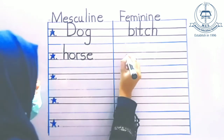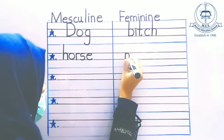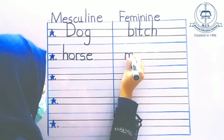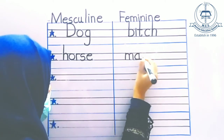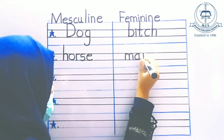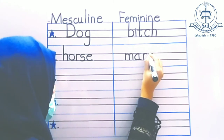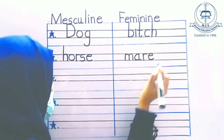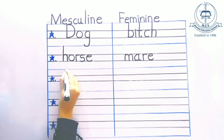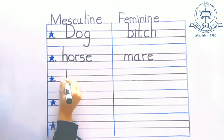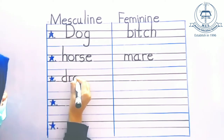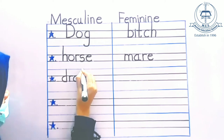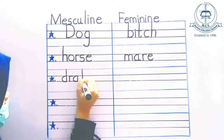H, O, R, S, E — horse. M, A, R, E — mare.